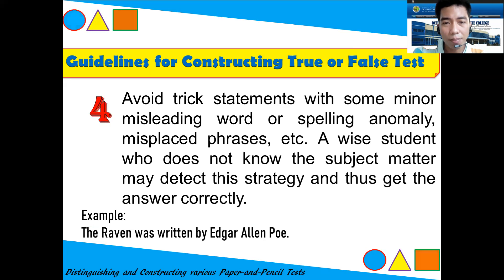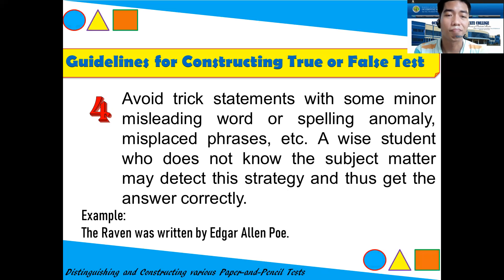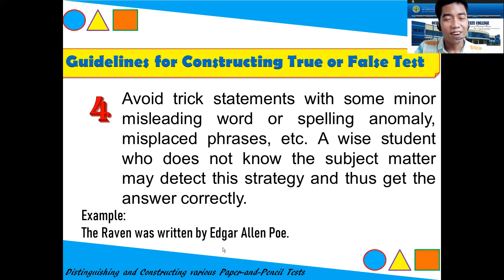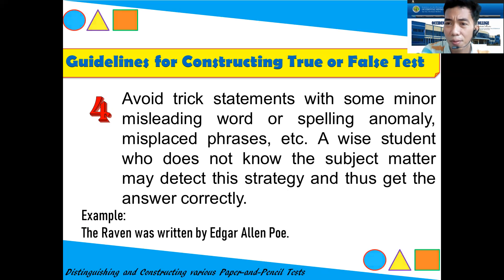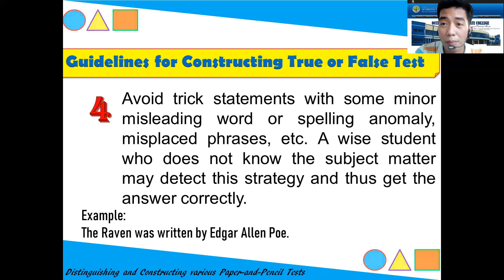Guideline four: Avoid tricky statements with minor misleading words, spelling anomalies, or misplaced phrases. A wise student who does not know the subject matter may detect this strategy and get the answer correct by trickery alone. For example, if you write 'The Raven was written by Edgar Allan and not Allan Poe' — students may think the statement is false because of the name order, not because of content knowledge. Do not create items with minor misleading words.